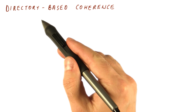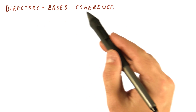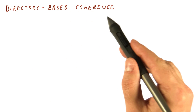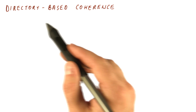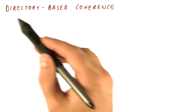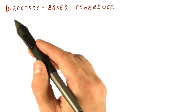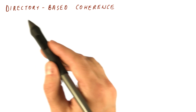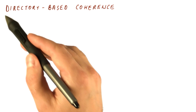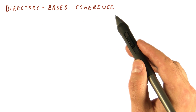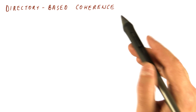We said already that snooping is only one of the two ways to do coherence. The other way is directory-based coherence. Let's first see why do we even want directory-based coherence — what's wrong with snooping?